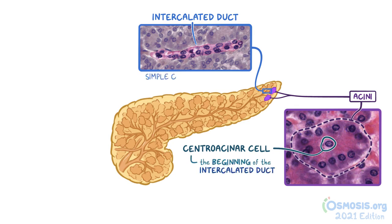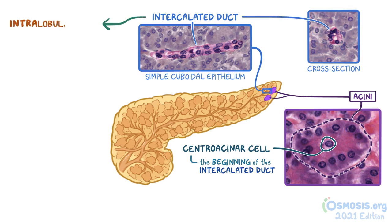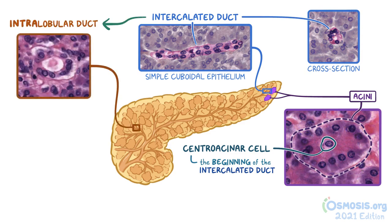These ducts are lined by simple cuboidal epithelium, and can be seen in this image as a linear arrangement of cuboidal cells. And in this cross-section of the intercalated duct, you can see the circular duct formed by the cuboidal cells. The intercalated ducts then drain into slightly larger intralobular ducts. As the ducts progress, they gradually increase in diameter, and the connective tissue surrounding these ducts also thickens.